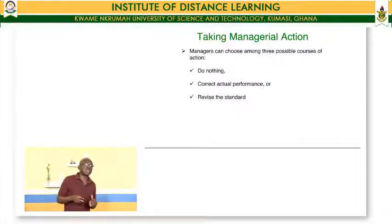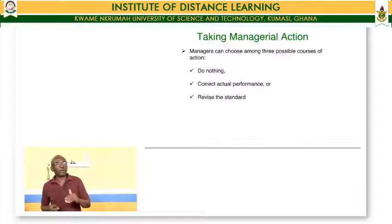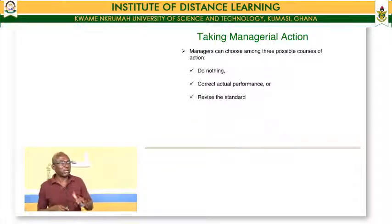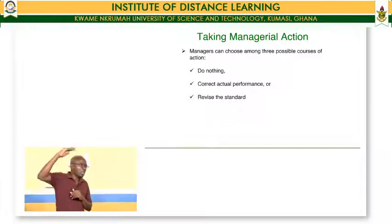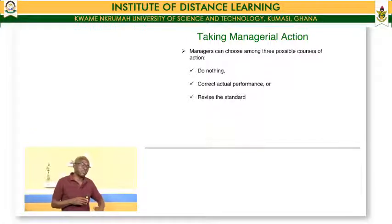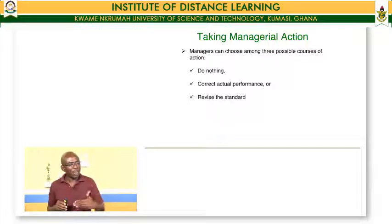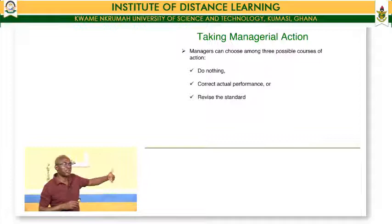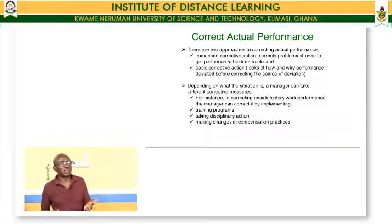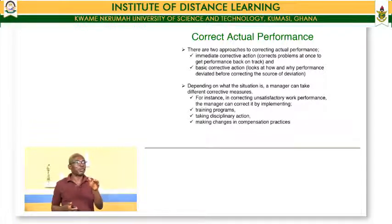The third step is to take managerial action. There are two or three options: do nothing — meaning the person is within the acceptable level; correct actual performance — the person has not reached the acceptable level and needs to be corrected, trained, or in severe cases fired; or revise the standard. Sometimes the standard can be too high for the person to achieve. If persistently people are not able to achieve the standard, you revise it to make it challenging but not difficult. There are two approaches to correction: immediate corrective action — correct a problem at once to get performance back on track — or basic corrective action, which looks at how and why performance deviated before correcting the source.